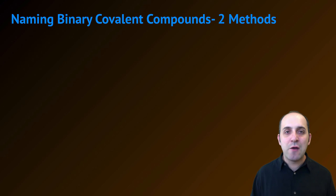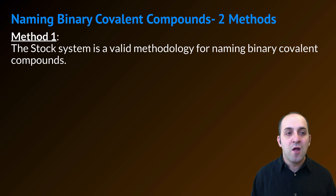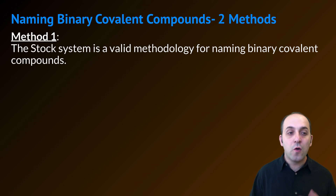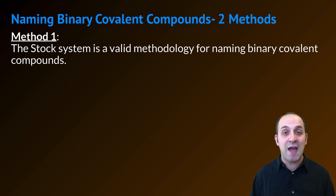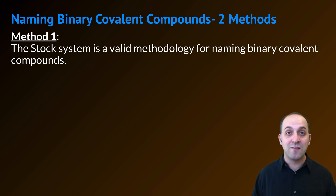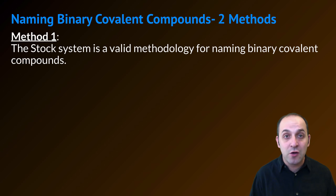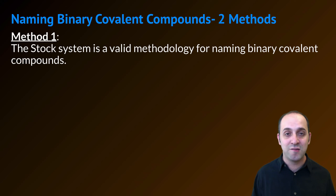When we want to name binary covalent compounds there are two methods we can use. The first is the stock system — we can totally use the stock system for naming binary covalent compounds. In that case, the more electronegative atom, the one that comes second, will have the oxidation state listed at the top. For the less electronegative atom we'd have to figure out its oxidation state and then assign its value in the stock system name.